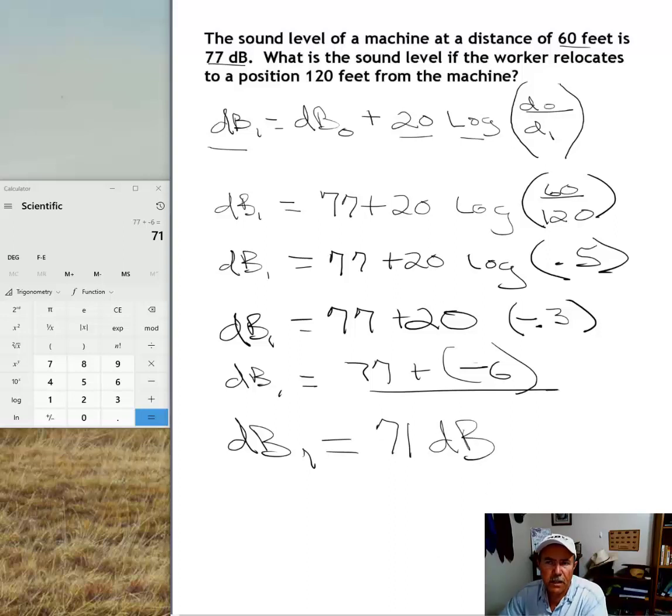So by going from 60 feet to 120 feet, the worker has reduced their noise exposure by six decibels, simply by making that move, that jumping distance.